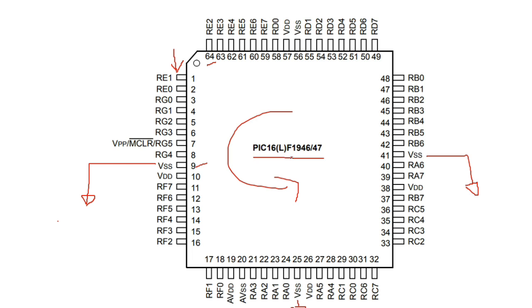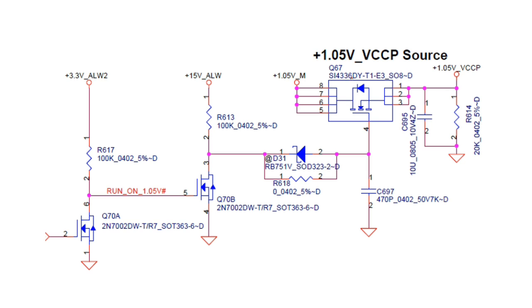The main component here is this MOSFET, Q67. We have plus 3.3 volts connected through a resistor directly to the drain of transistor Q70B. We also have another MOSFET with drain, gate, and source. The source of this MOSFET is connected to digital ground. A signal of approximately 1.05 volts goes directly to the gate of this MOSFET, and we also have plus 15 volts.